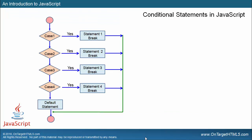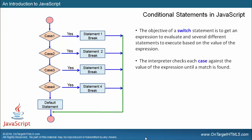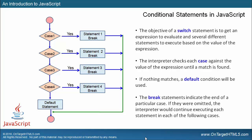So you'll notice I've got case 1, 2, 3, and 4, and then a default statement. Based on the match of the case, it determines what statement group is used. If nothing matches, a default condition will be used at the very end of the code. Once the statements are executed, it goes back to the flow of the code. The break statement indicates the end of a particular case — if the break statements were omitted, the interpreter would continue executing each statement in each of the cases.